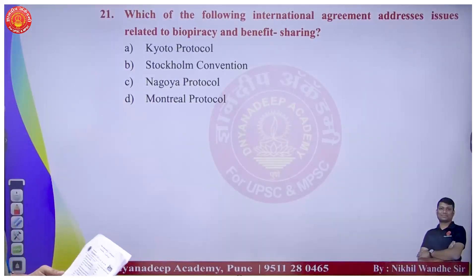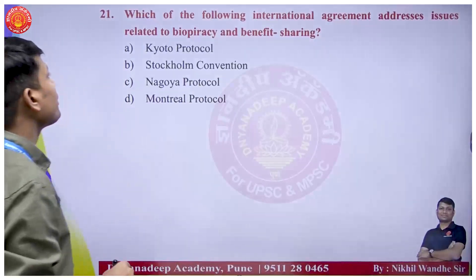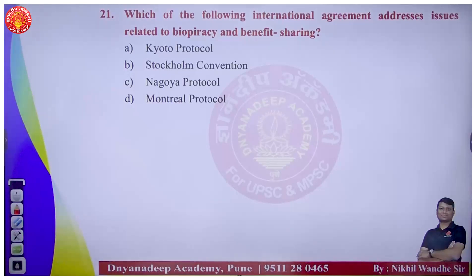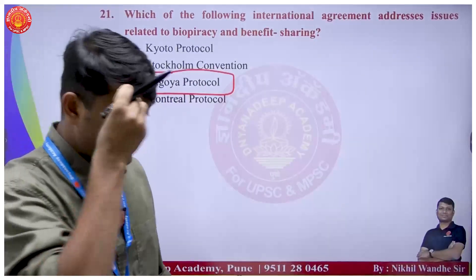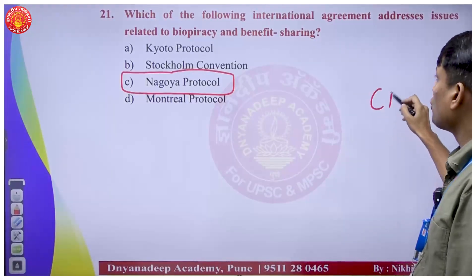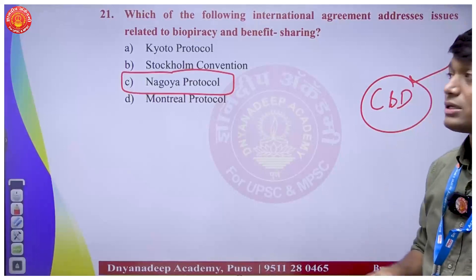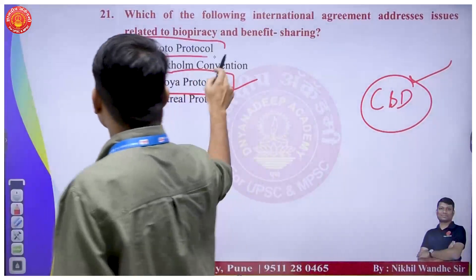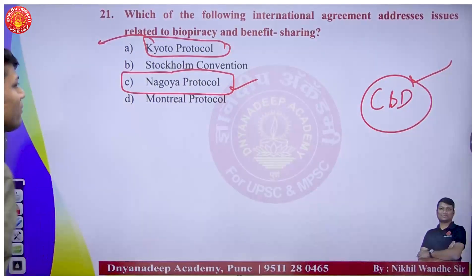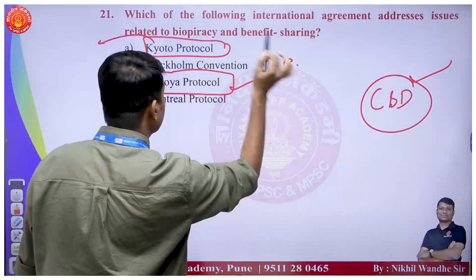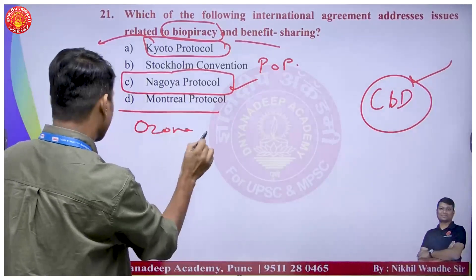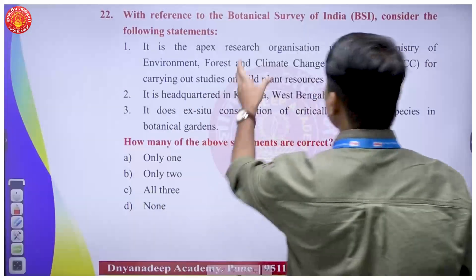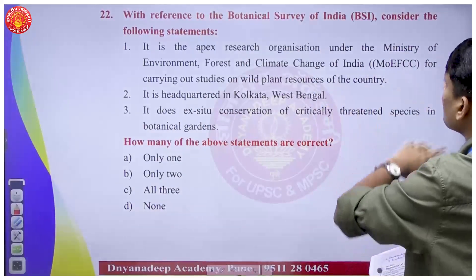The international agreement addressing biopiracy and benefit sharing is the Nagoya Protocol under the Convention on Biological Diversity (CBD). Stockholm Convention is regarding Persistent Organic Pollutants (POPs). Nagoya Protocol is regarding biodiversity, specifically biopiracy and benefit sharing. Montreal Protocol is regarding ozone protection.